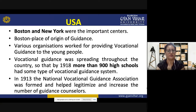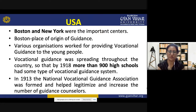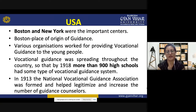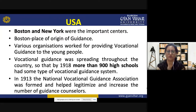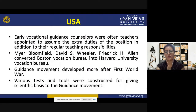In the USA, Boston and New York were the important centers. Boston is known as the place of origin of guidance, and various organizations worked for providing vocational guidance to young people. By 1918, more than 900 high schools had some form of vocational guidance system. In 1913, the National Vocational Guidance Association was formed, which helped legitimize and increase the number of guidance counselors. Early vocational guidance counselors were often teachers appointed to assume extra duties in addition to their regular teaching responsibilities.